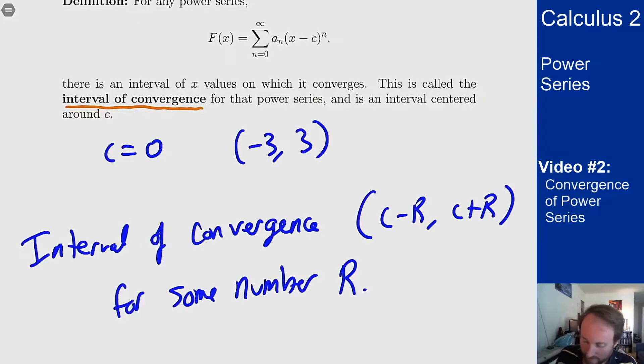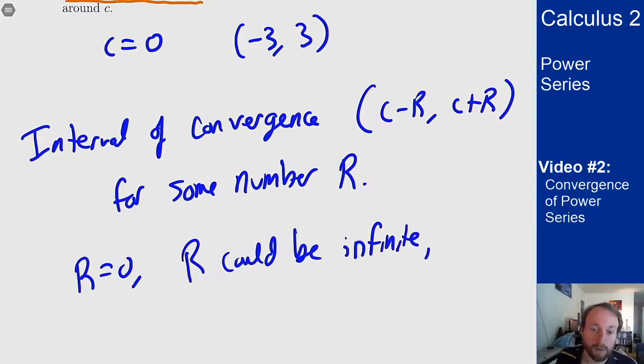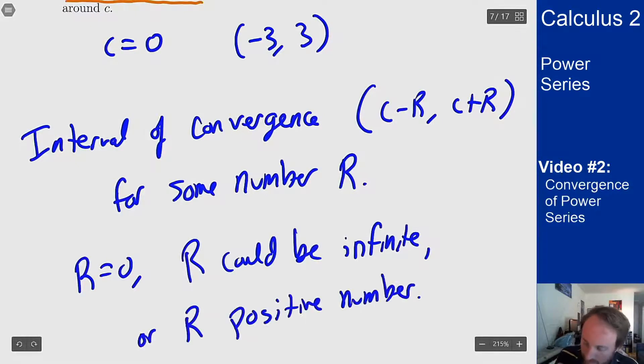This r could be anything, this r could be zero, this r could be infinity, or this r could be some positive number. And this r is called the radius of convergence.